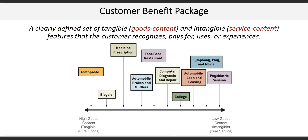Another concept included in Chapter 1 was the Customer Benefit Package, which is a clearly defined set of tangible, or goods content, and intangible, or service content, features that the customer recognizes, pays for, uses, or experiences. The scale of tangible to intangible can take us from simple products like toothpaste to pure services like psychiatry. Other offerings have elements of both a good and a service — consider a restaurant, which provides a tangible product like food, but delivers it as a service.